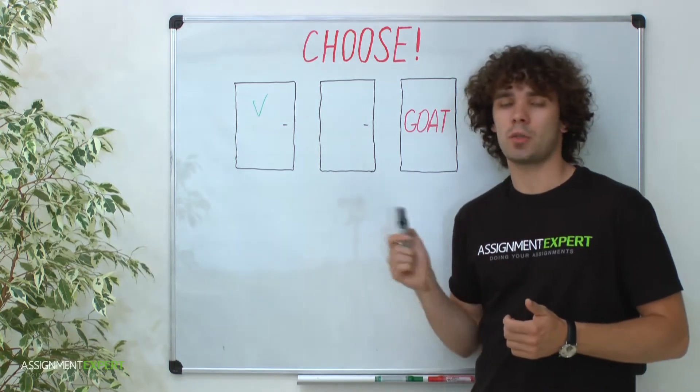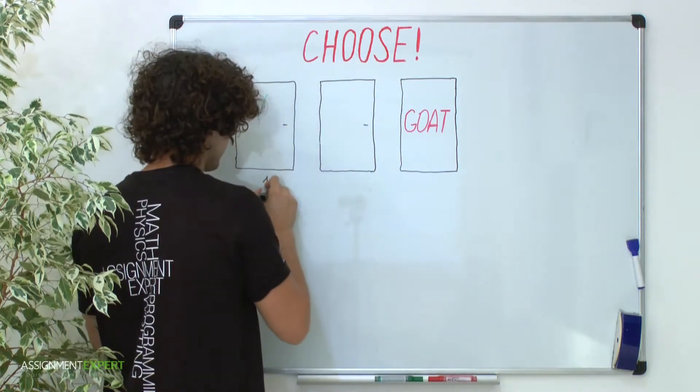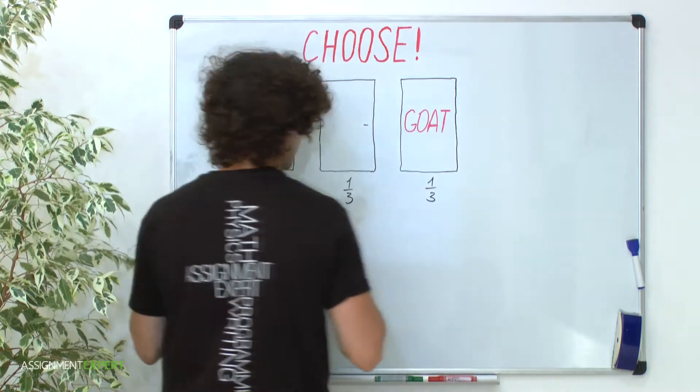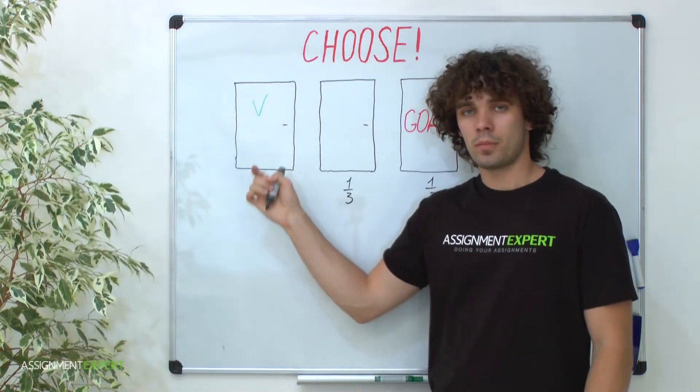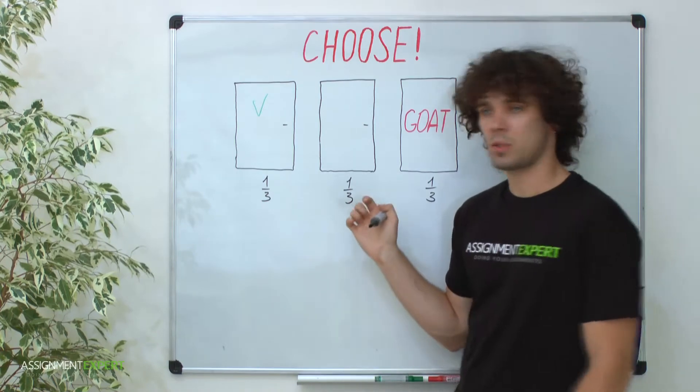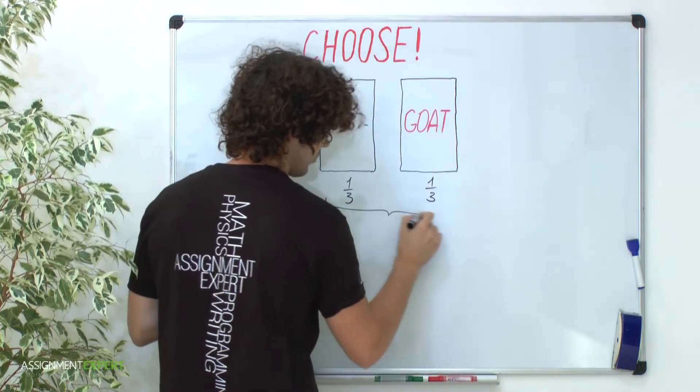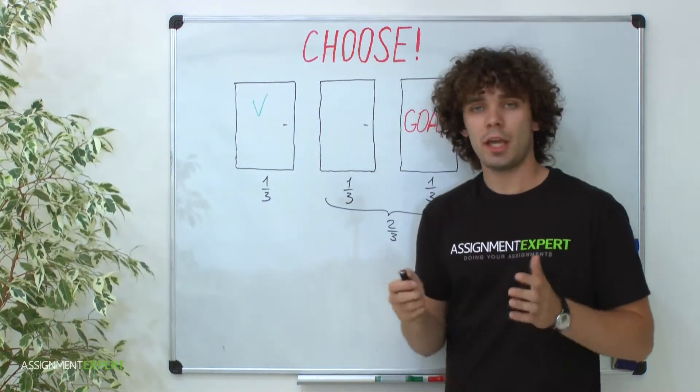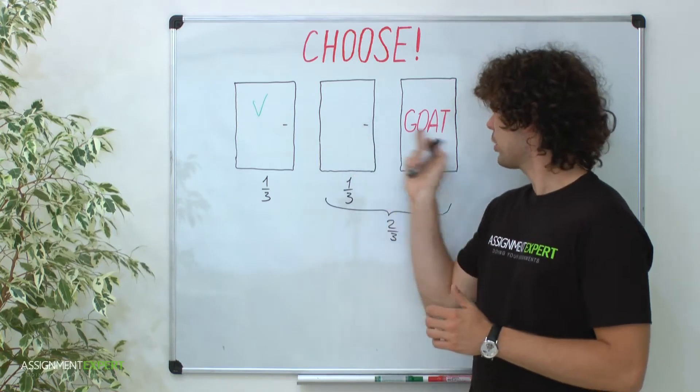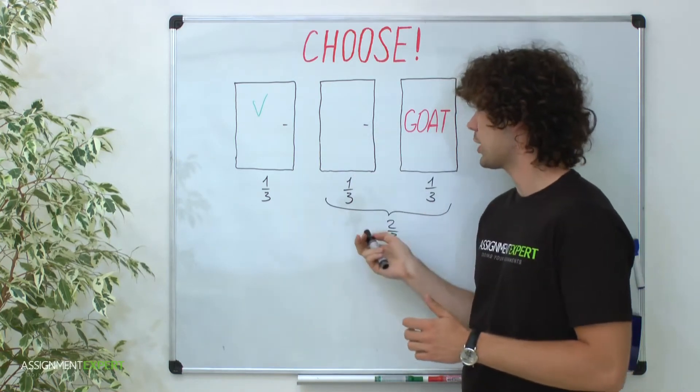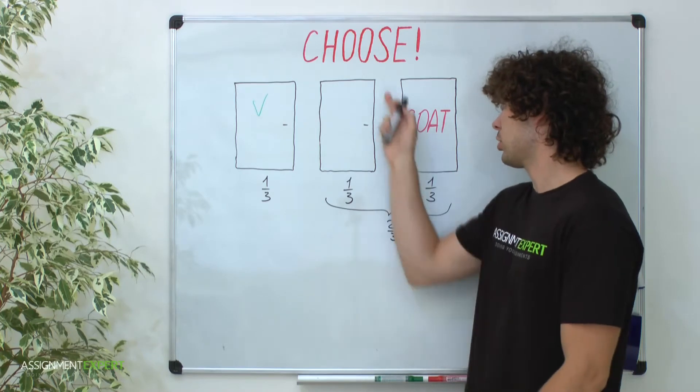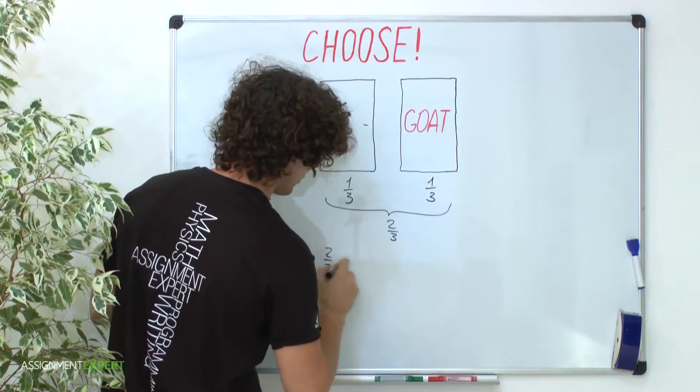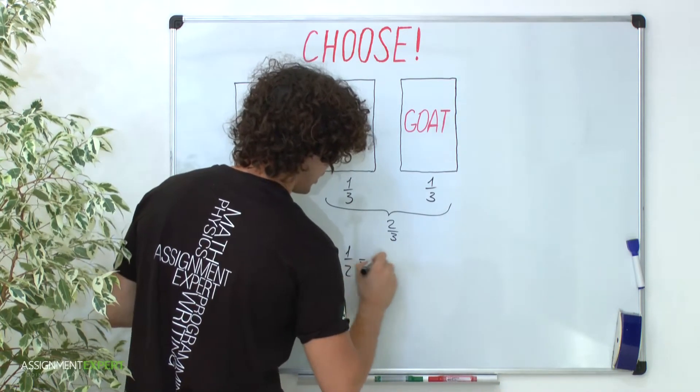So initially each door has a one-third win probability. You pick the first door. Two other doors combined give us probability two-thirds. If we still have all three doors closed, the probability for one of these two will be two-thirds times one-half, because we take only half of two-thirds when you go one of the doors. So two-thirds times one-half equals one-third.